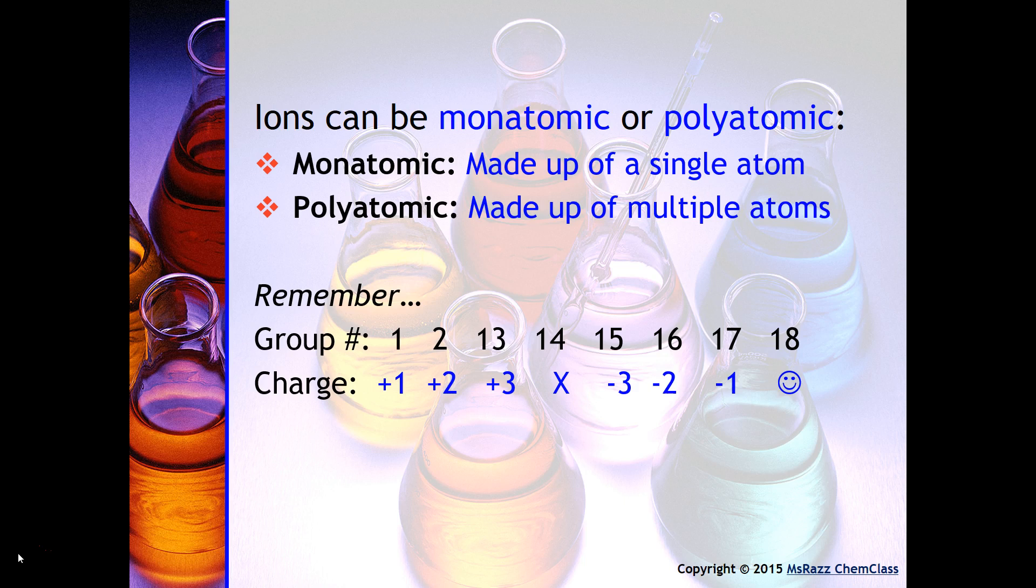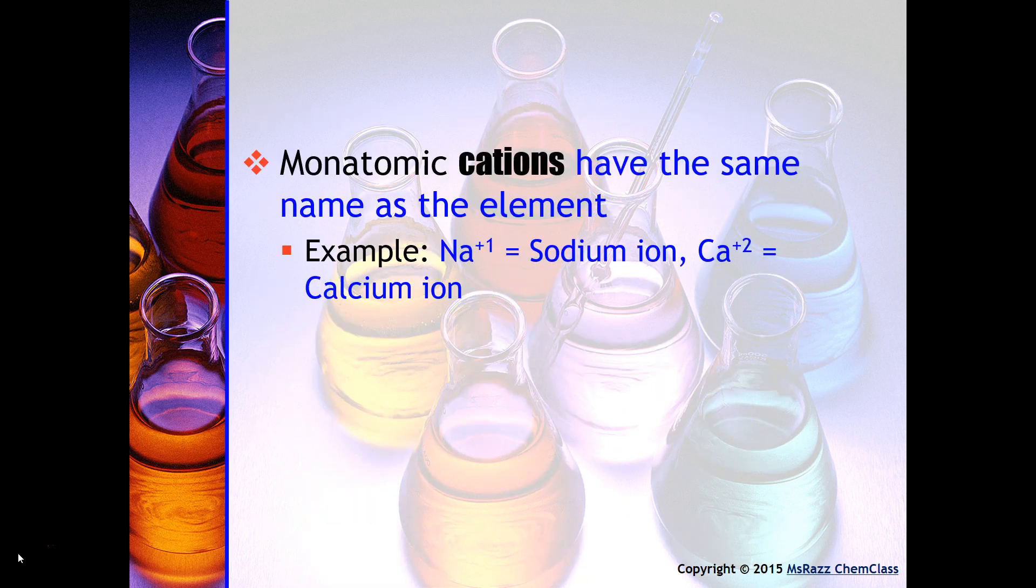Remember, these are the charges that are associated with each group. You will need to use these in order to write correct formulas. Monatomic cations have the same name as the element. So for example, if you see sodium with a one plus charge, that is the sodium ion. If you see calcium with a plus two, that is the calcium ion. We do not change the name of the ending at all for these elements.